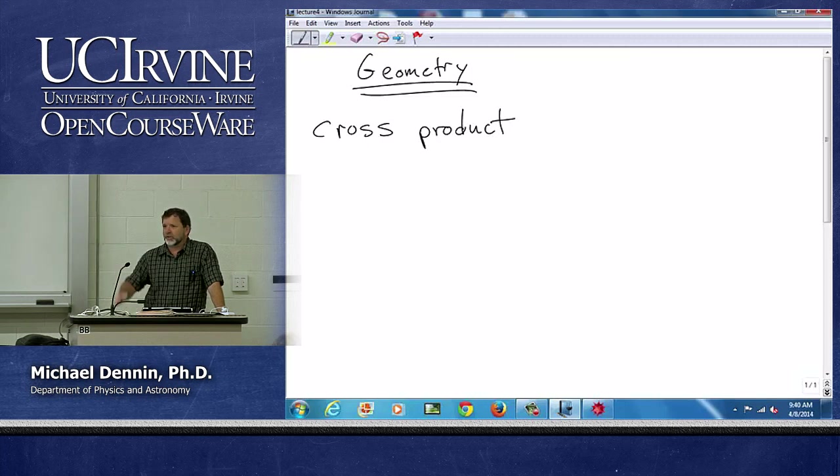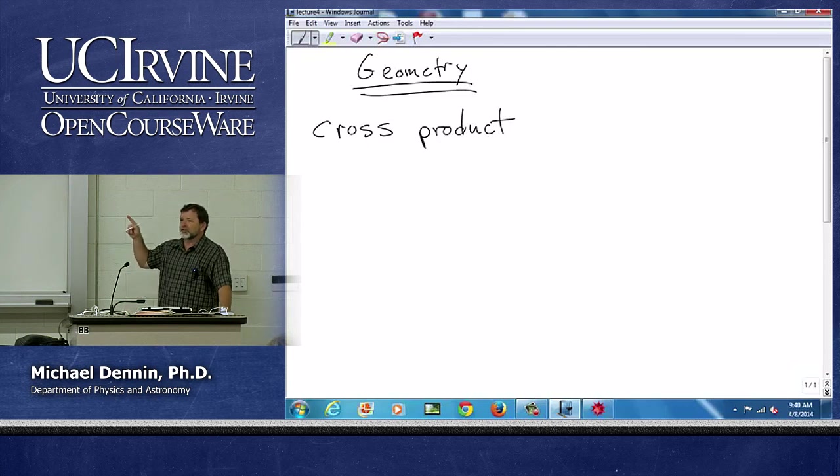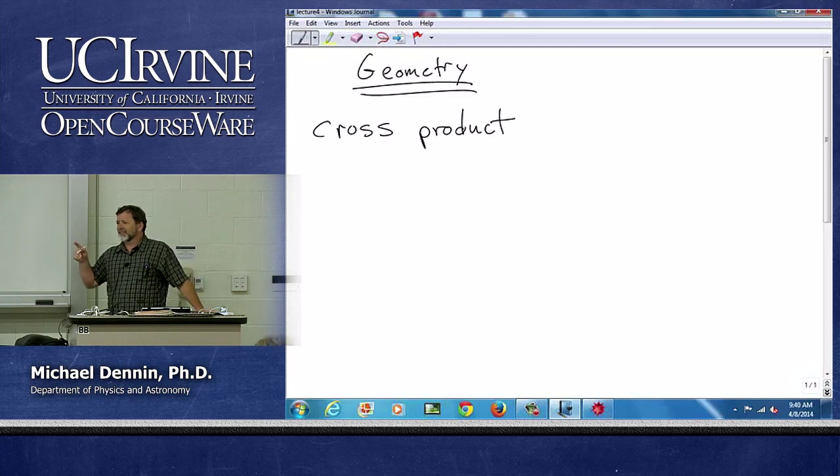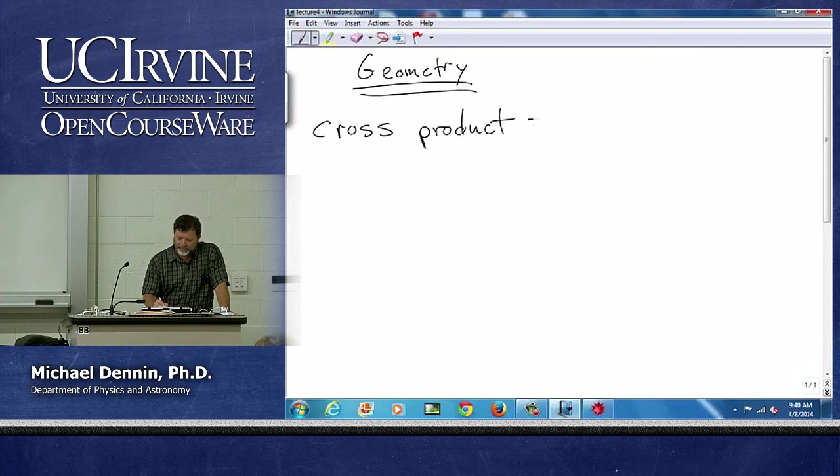It can give you a determinant. It gives you an orthogonal vector to two vectors. Yeah, it does do that, but what is it really? Remember, the title of this is geometry. It's the magnitude of two vectors multiplied together and multiplied with the sine. And what does that formula give you? It's the area. It's the area between two vectors. So cross product is fundamentally the area of a parallelogram.